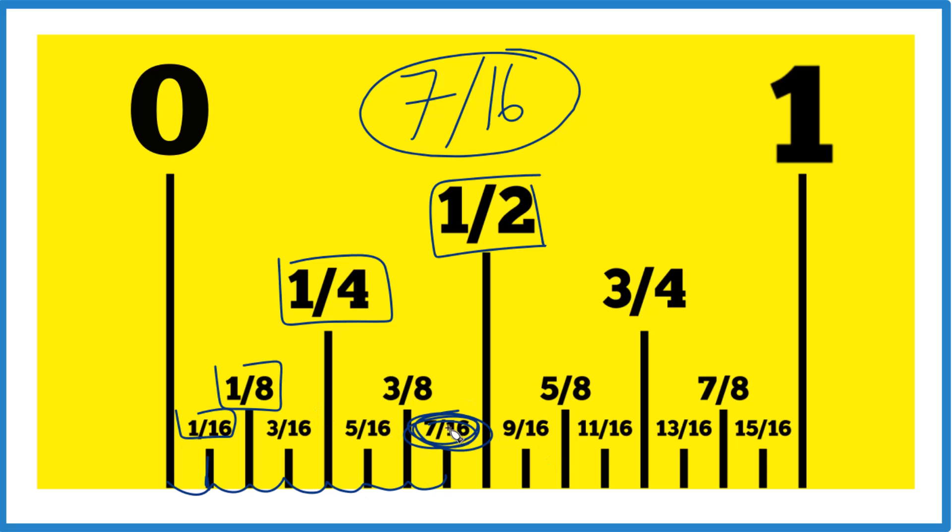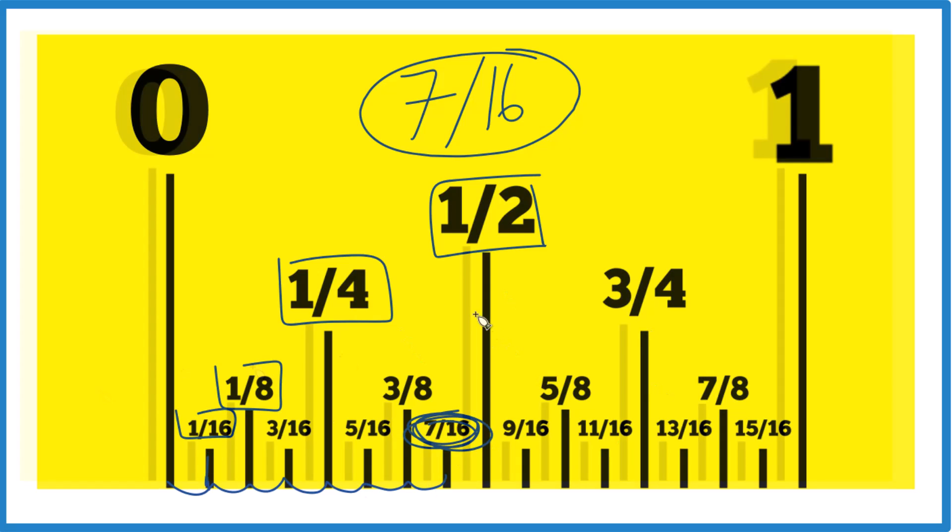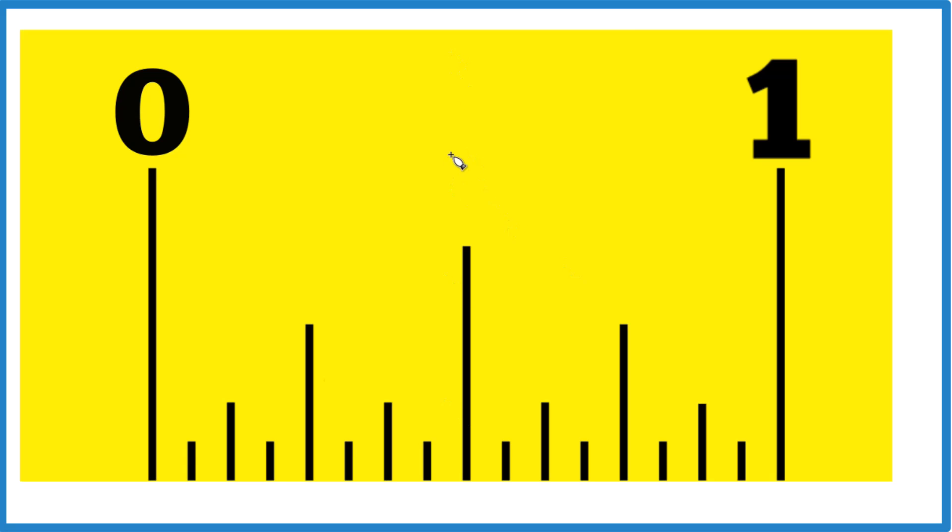Let's do this again on a blank tape measure so you can remember. We have 0 to 1. We cut that in half, we get 1 half. Cut the 1 half in half, we get 1 fourth.